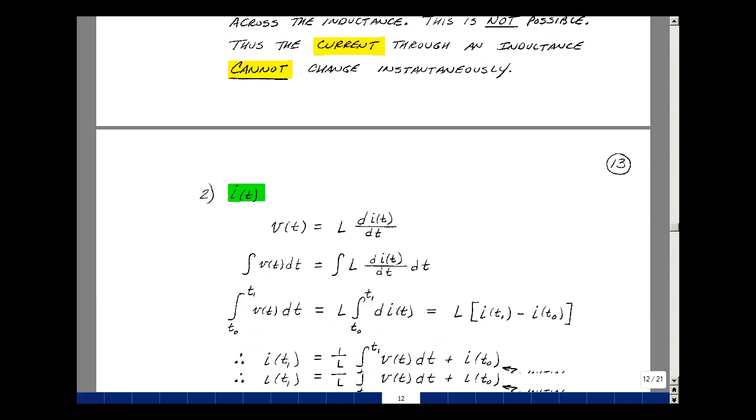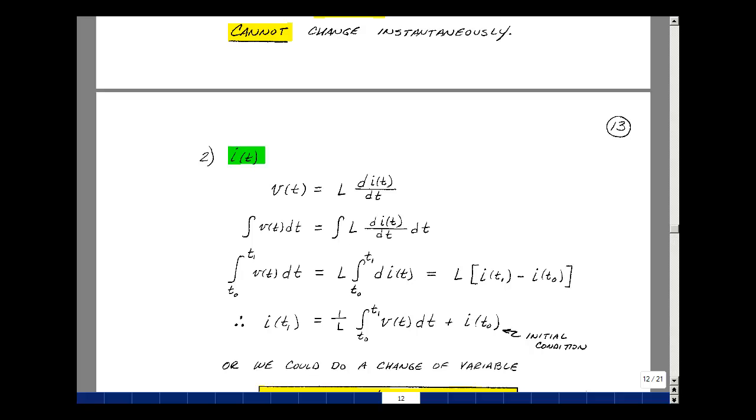So for an inductance we have that the voltage is equal to L dI/dt. Let's solve for the current in terms of the voltage. Let's integrate both sides of the equation dt.